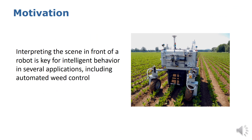There are many applications where it's important for a robot to understand and interpret the scene it finds itself in. One such application that we address in our paper is automated weed control, where the robot has to distinguish between crop and weed.